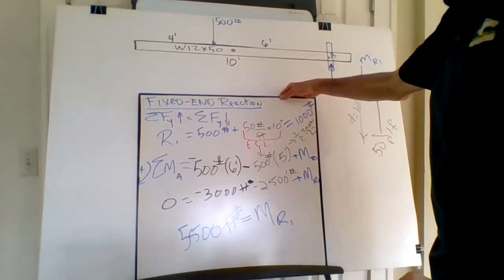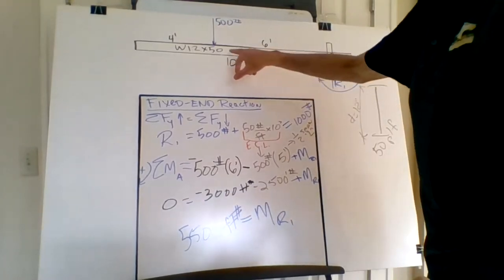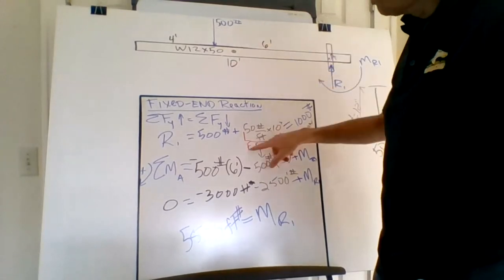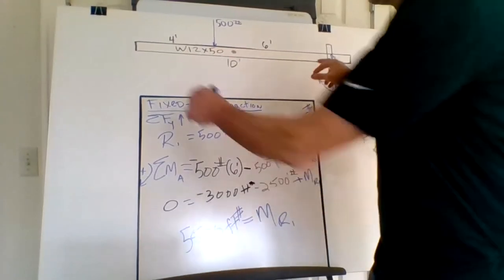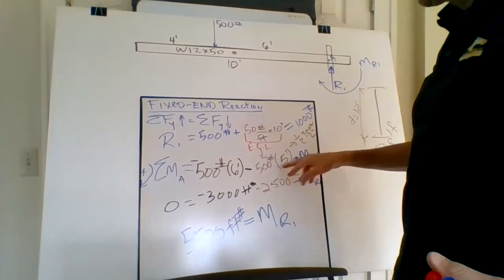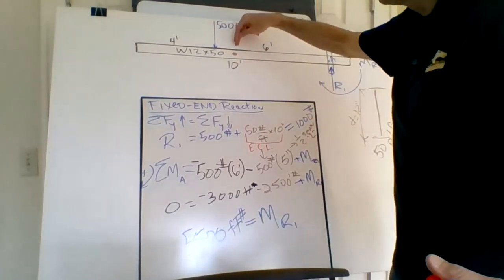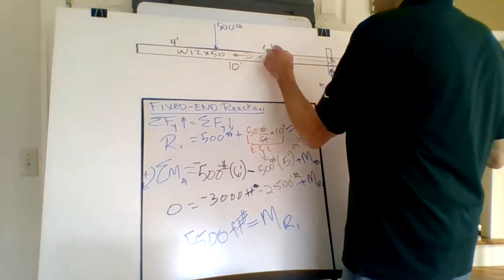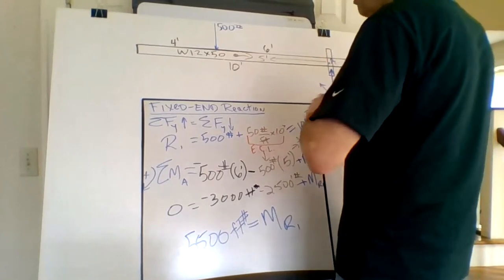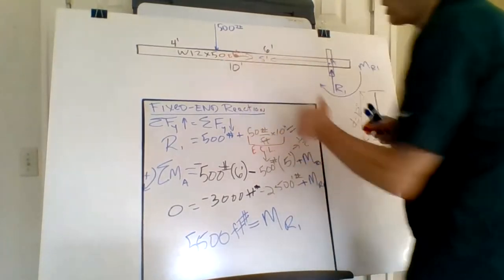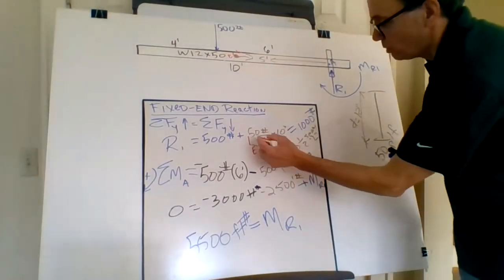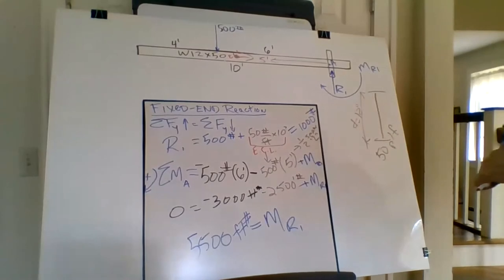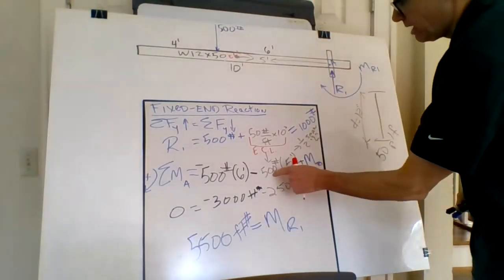Question: what is the 5 feet? Good question — the weight of this beam, or rather the equivalent concentrated load, is 50 pounds per foot over 10 feet, giving 500 pounds. That acts through the center of the span, so the moment arm is half the span length — 5 feet. That's the moment arm for that equivalent concentrated load.